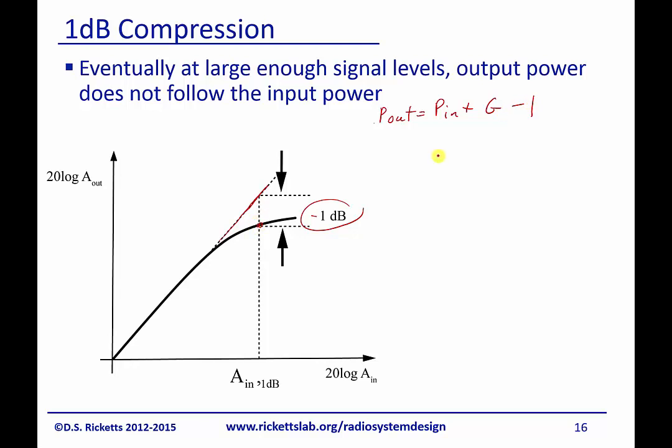So if you remember, the gain is simply alpha_1 plus 3 quarters alpha_3, actually we rewrote that and I'll do that to make it simpler, alpha_1 times 1 plus 3 quarters alpha_3 over alpha_1 times A_in squared. That is our voltage gain, if you remember, and we're going to want that to find out when it is equal in the power domain to G minus 1.